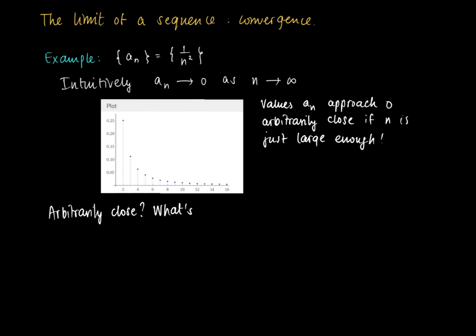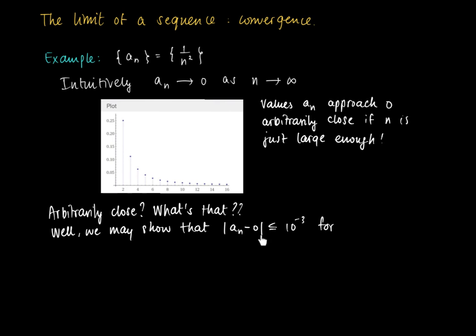We need to specify what we mean by 'arbitrarily close.' We look at the distance of the elements to zero. Can we show that at a certain point in the sequence, all elements |a_n - 0| — the distance of a_n to zero — are smaller than one-thousandth? Can we show that for n large enough this holds true?